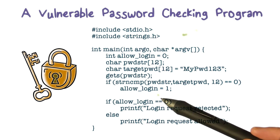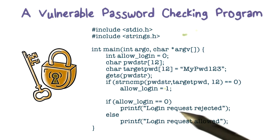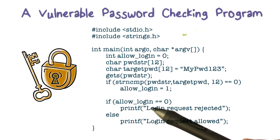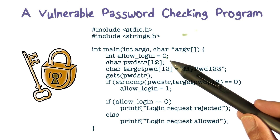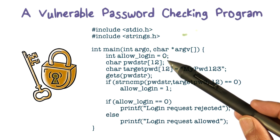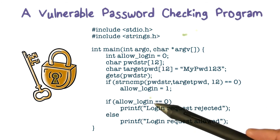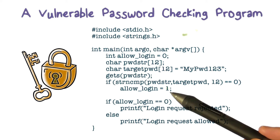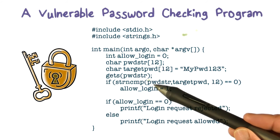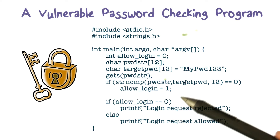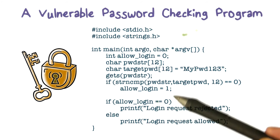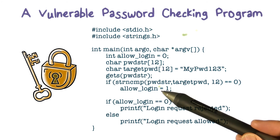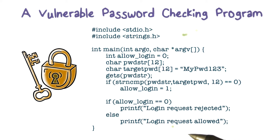In this case, allow_login is set to one. After that, we say: if allow_login is zero — remember that was the initial value — we assumed we don't allow login unless there is a match. Remember the fail-safe defaults we talked about? The default here is don't allow, so that's why we set it to zero. If the variable was not set to one as a result of a successful comparison, then it's still zero, and in that case we reject the login request. Otherwise, the match was successful, we set it to one, and we allow the login request.